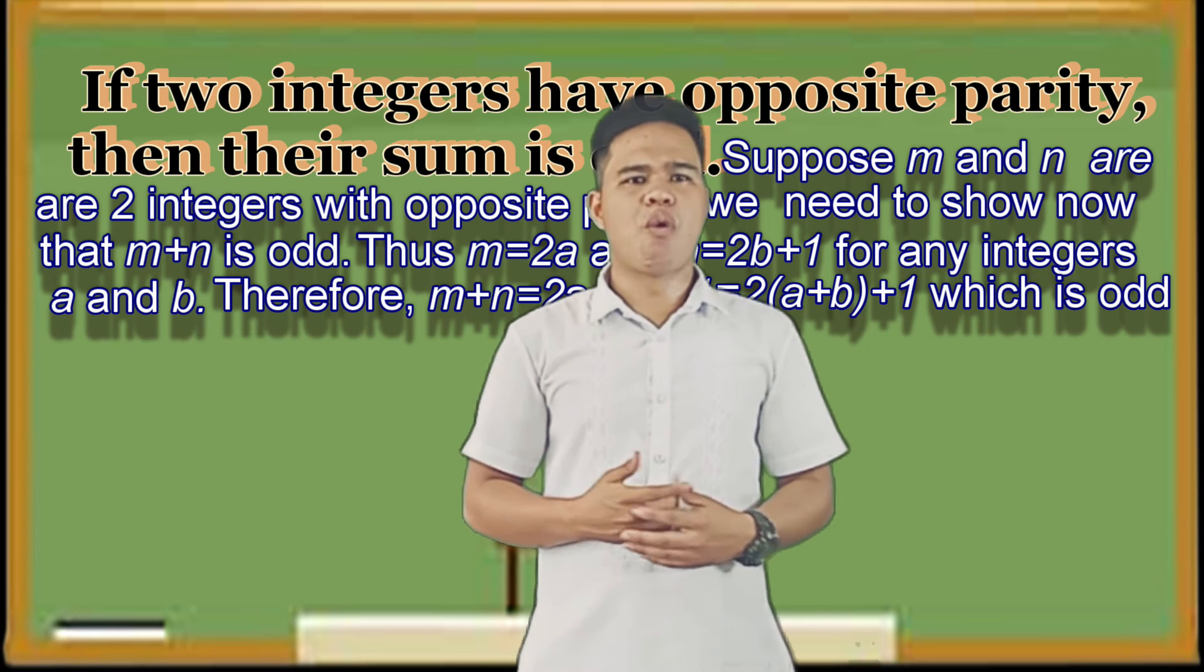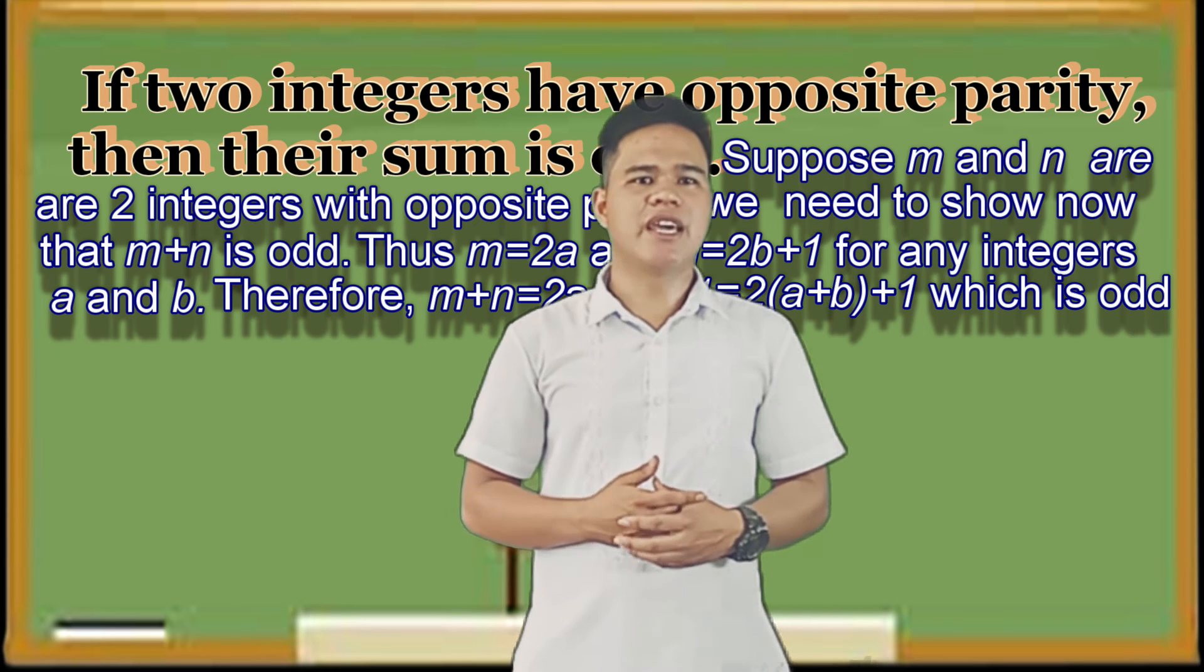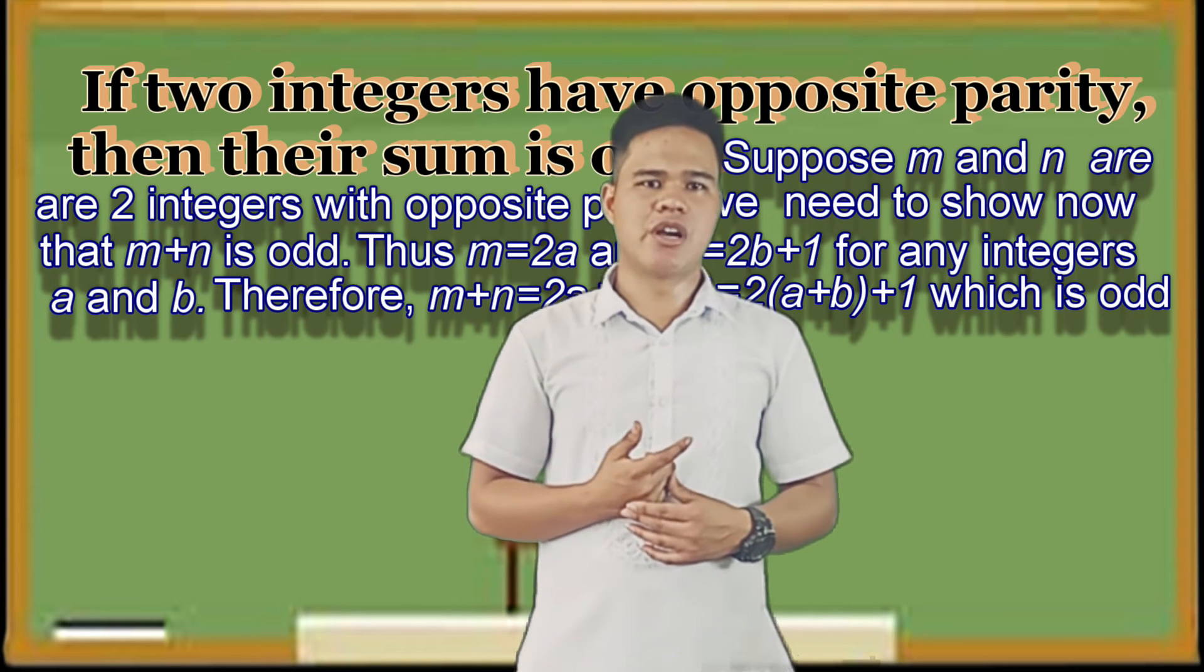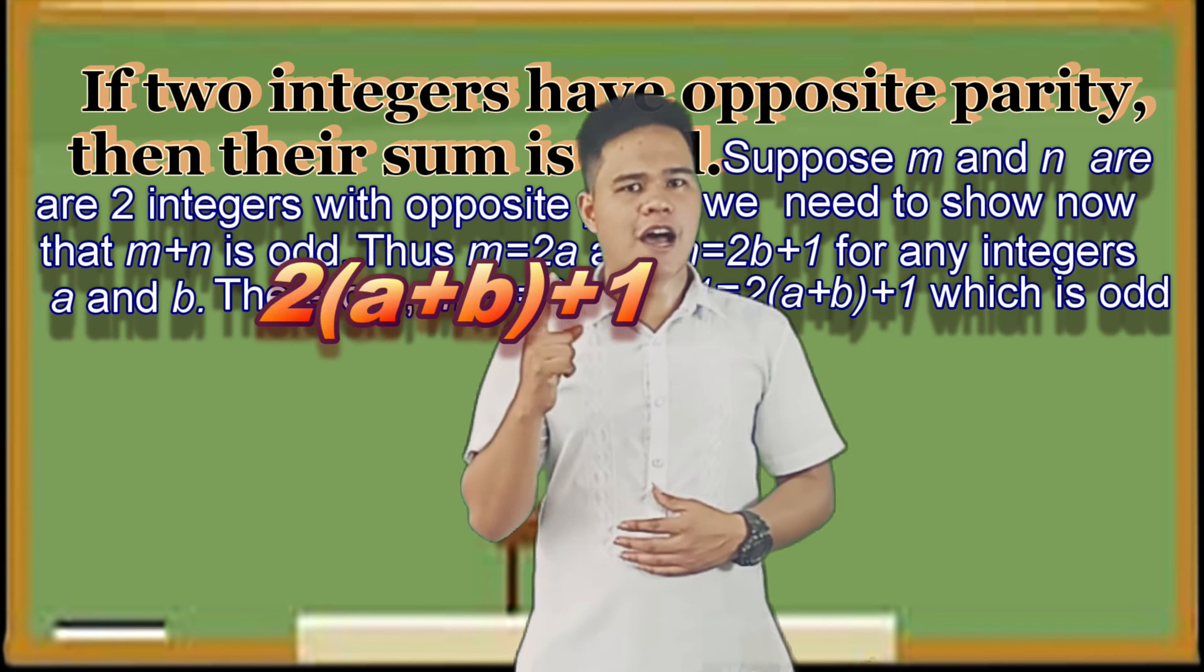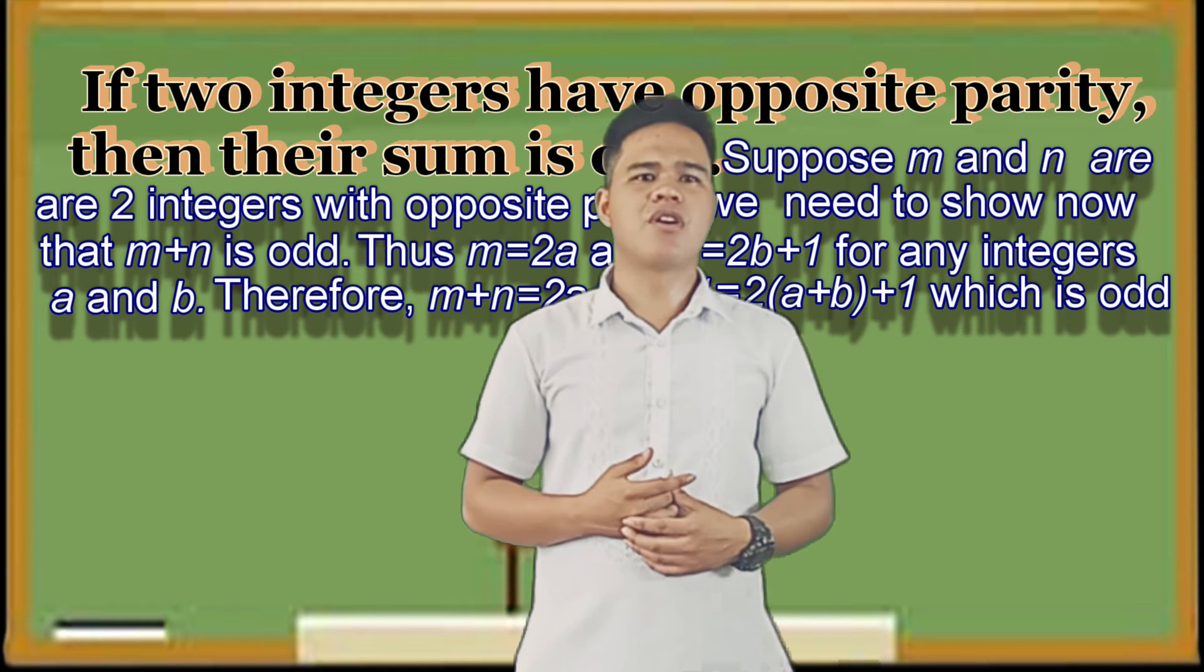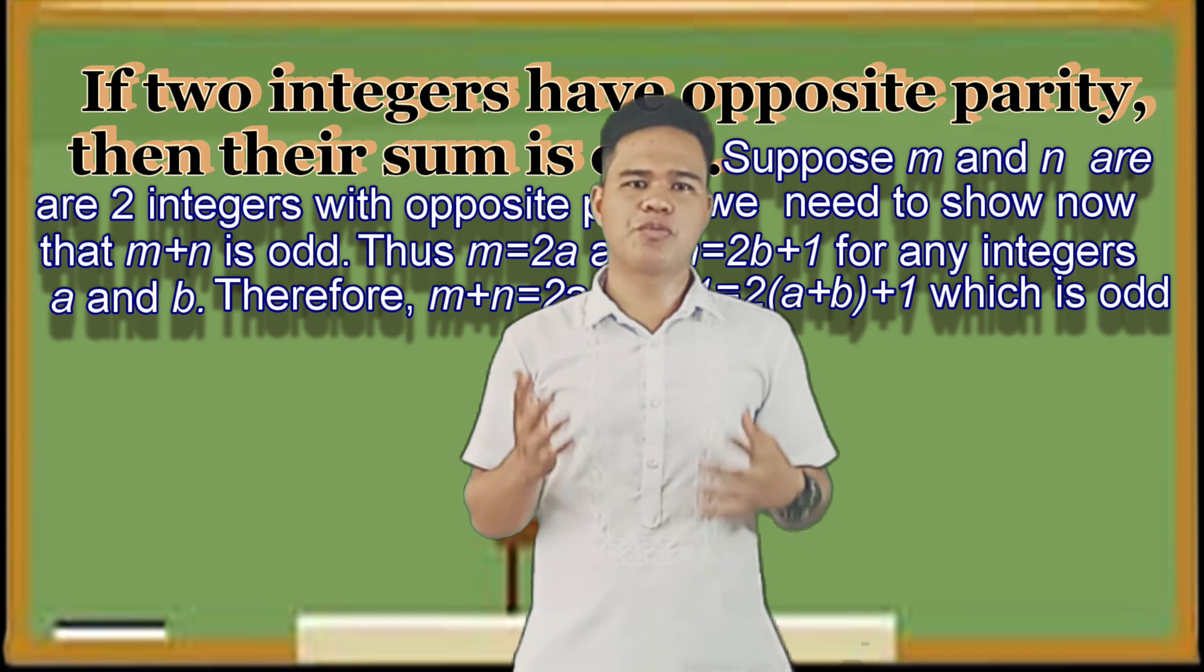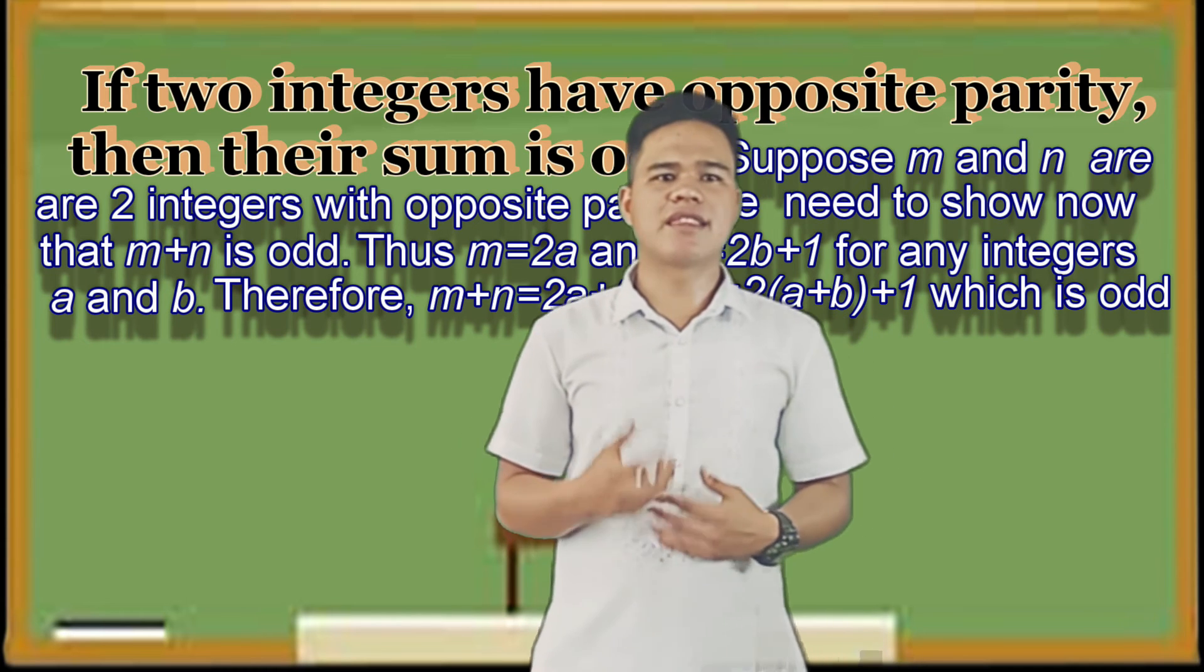It is odd because whatever the value of A and B, whether odd or even or negative integers, when it comes to this formula, then that sum is odd. We can see that the conclusion is proven from those previous statements, and that is direct reasoning.